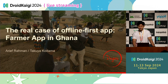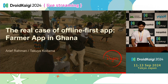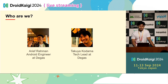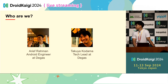Hi everyone, thank you for selecting this presentation. We will talk about the real case of an offline-first app — a farmer app in Ghana. My name is Arif, I am an Android engineer at Degas. And this is Takuya Kodama, Android engineer and also tech lead at Degas.